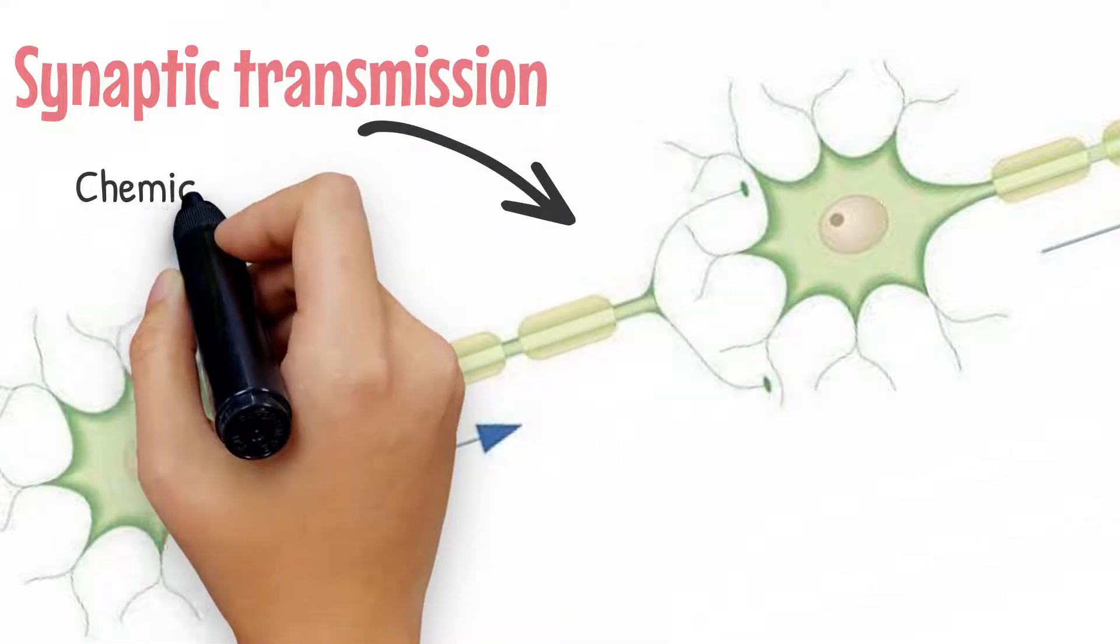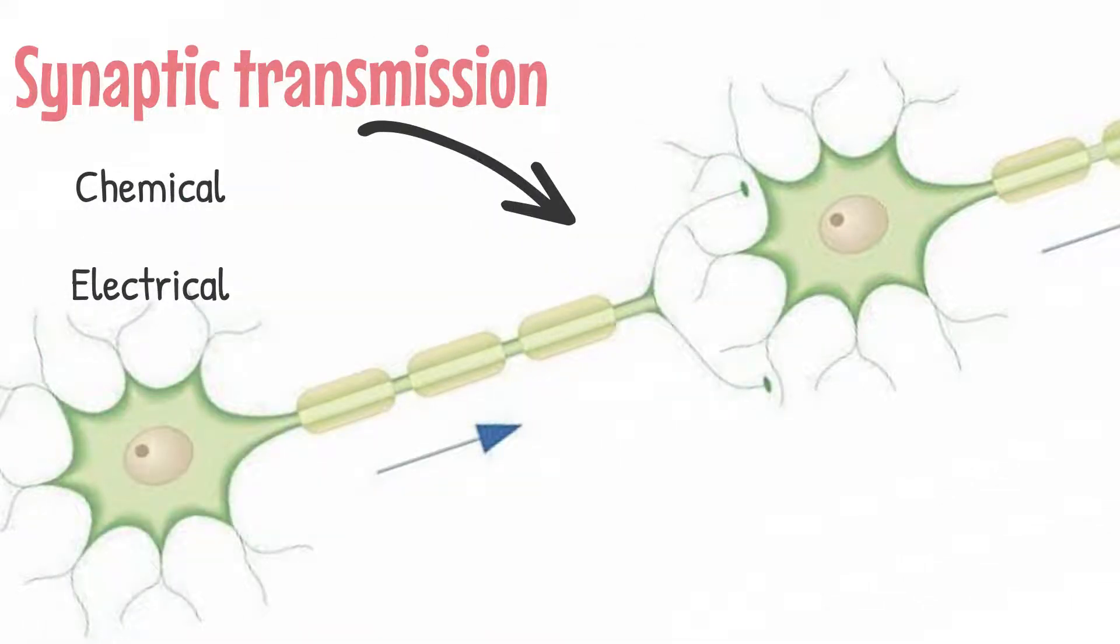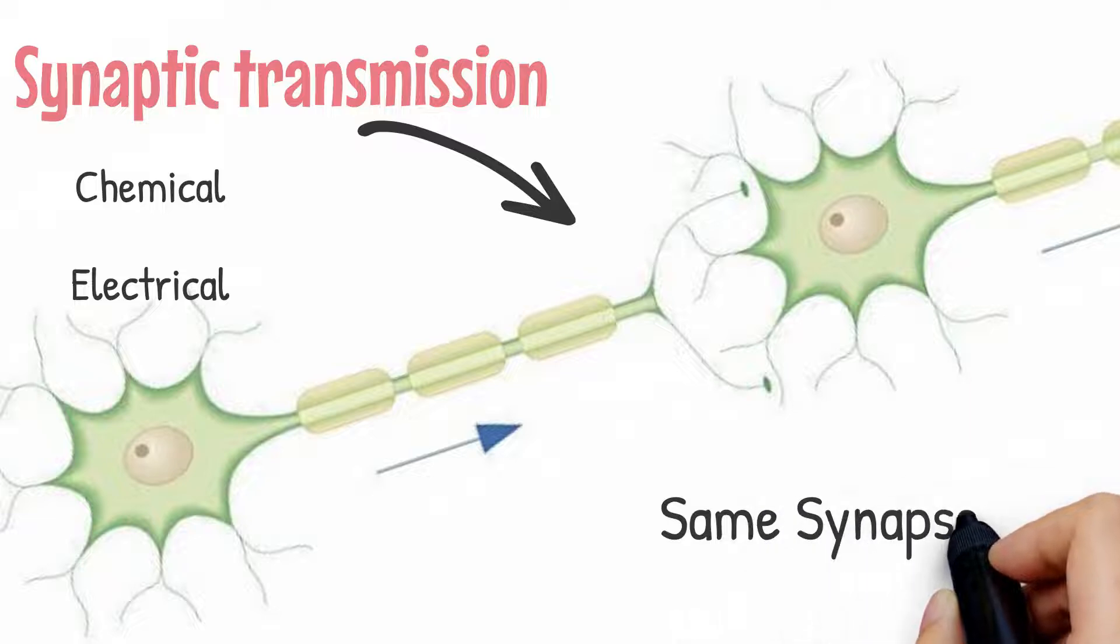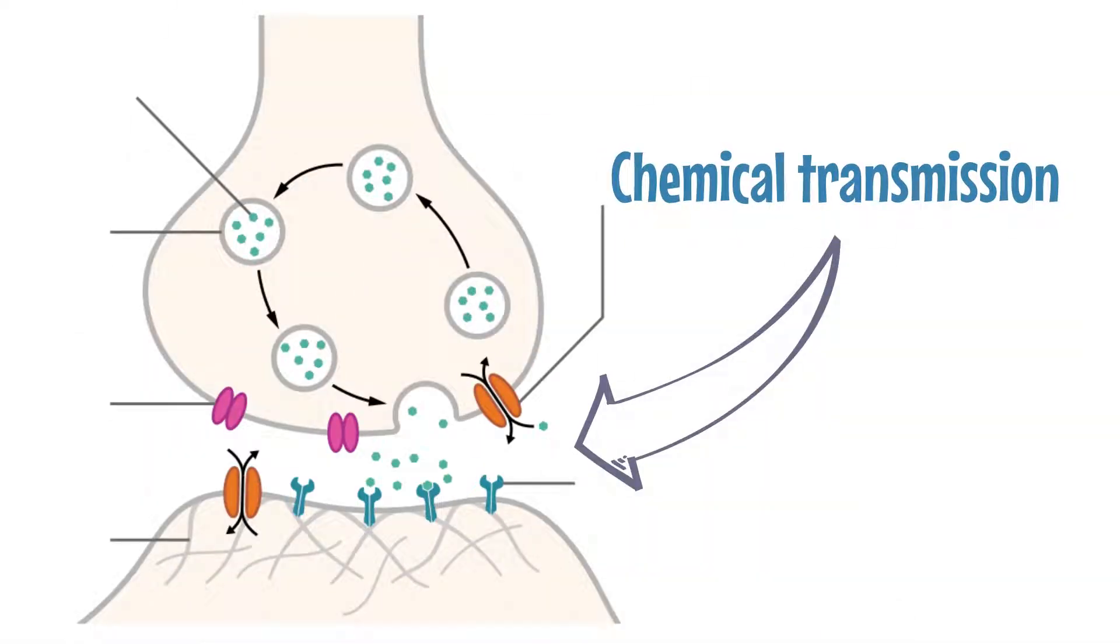Synaptic transmission can either be chemical or electrical. In some instances, both can occur at the same synapse. Chemical transmission is more common, albeit more complex.